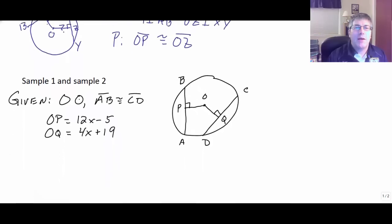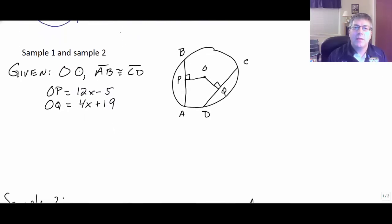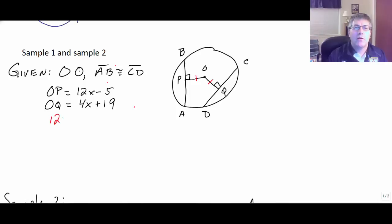Let's take a look at a couple of sample problems. Sample one: we're given that segment AB is congruent to segment CD, so those chords are congruent, and OP and OQ are perpendicular segments giving us distance. If two chords are congruent, then they're equidistant from the center of the circle. So we know OP is congruent to OQ, which means 12x minus 5 equals 4x plus 19. We get 8x equals 24, so x equals 3.